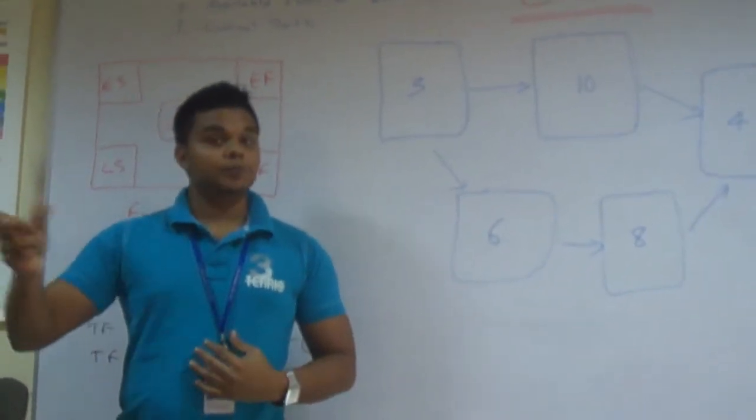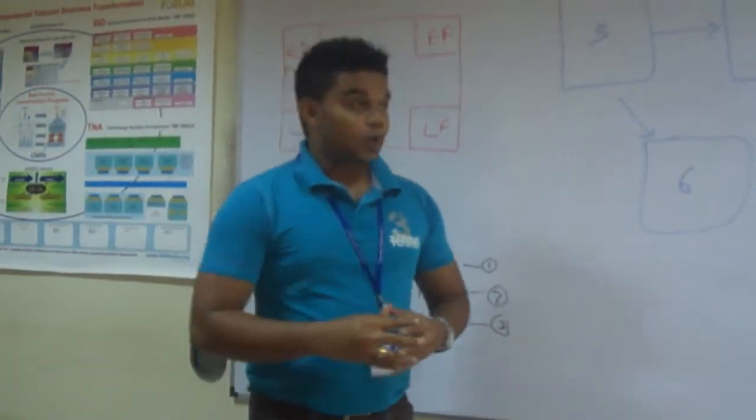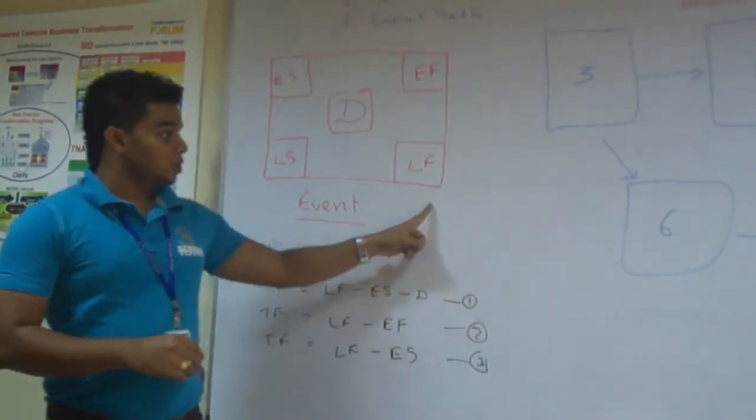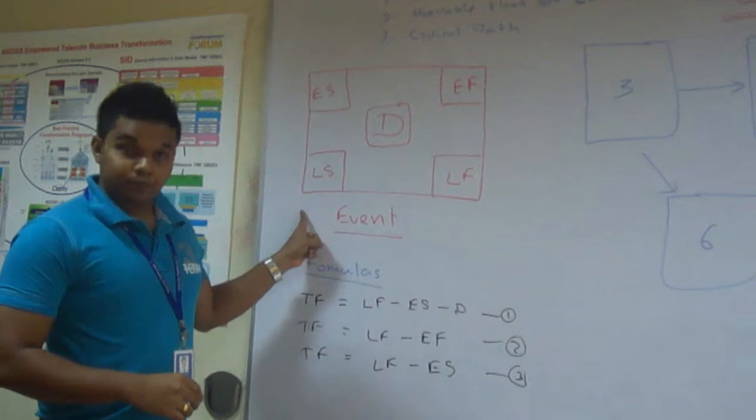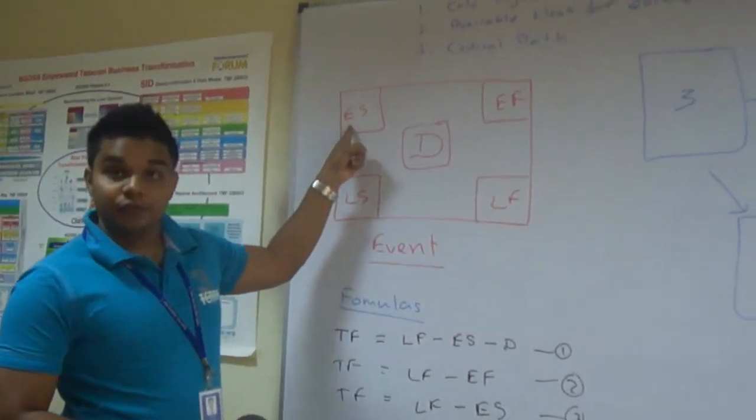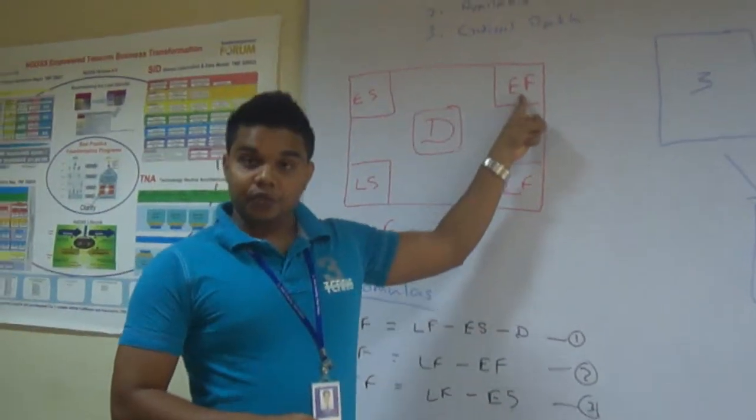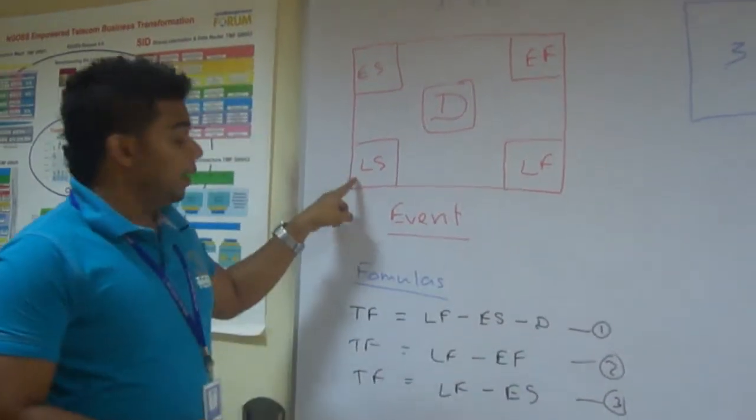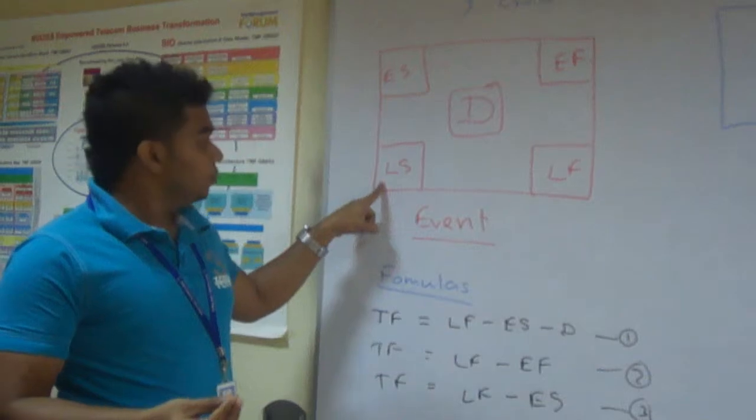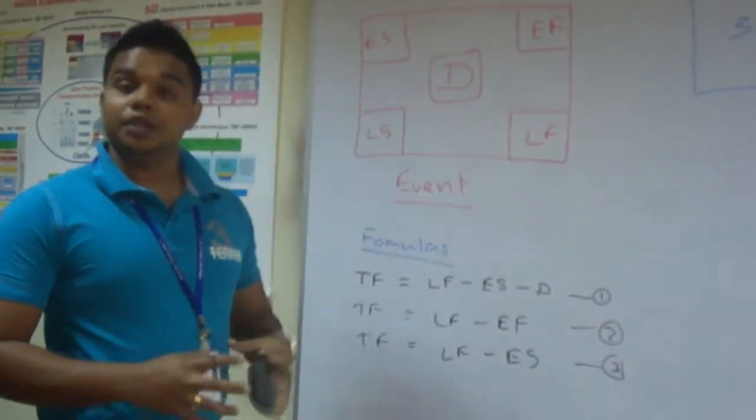So here I have drawn a box. Now you need to remember this box. Take this as an event. I have listed ES which is the earliest start date. Here EF which is the earliest finishing date. LS stands for the latest start date. LF is the latest finishing date. D is the expected duration.